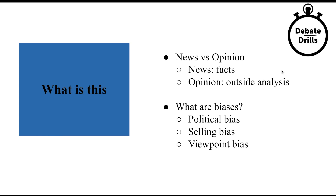It's not always necessarily a bad thing, but it is something to be aware of. The second type of bias is selling bias. This is where newspapers write their articles in such a way as to get readers to read them, as opposed to portraying the most accurate or realistic information. Oftentimes this manifests itself in the form of clickbait headlines, where they write headlines for the sake of getting you to click, but the headlines aren't exactly accurate. Again, something to be aware of.